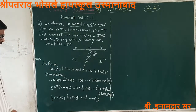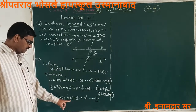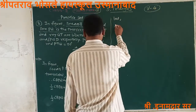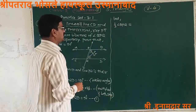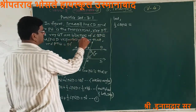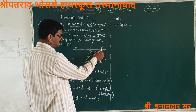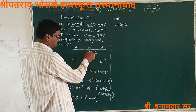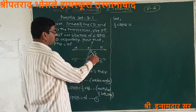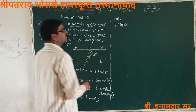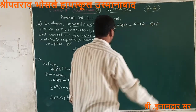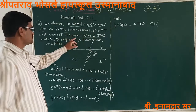Now, what is the value of one-half angle BPQ? Since ray PT is the bisector of angle BPQ, one-half of angle BPQ equals angle TPQ. This is step 2. The reason is: ray PT is bisector of angle BPQ.